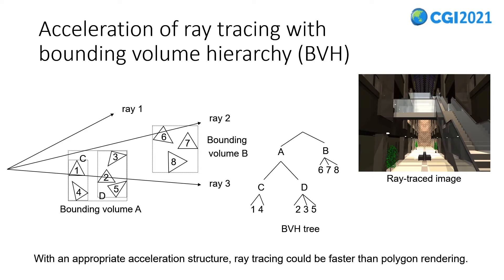The BVH makes groups of primitives and constructs a hierarchy among them. With an appropriate acceleration structure, ray tracing could be faster than polygon rendering, because ray tracing cost is sublinear to the total number of primitives. Therefore, ray tracing could be a good alternative for interactive applications.